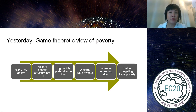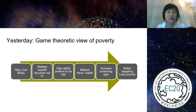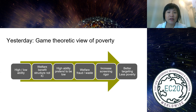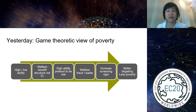Yesterday we talked about a game-theoretic view of poverty and targeting. We started with high- and low-ability people, and if the welfare benefit structure is not incentive compatible, the high types will pretend to be low types, resulting in welfare fraud or waste. So what people do is increase screening rigor, which results in better targeting and less poverty.